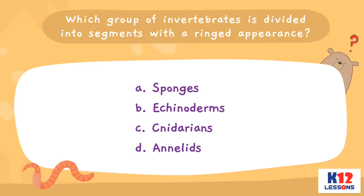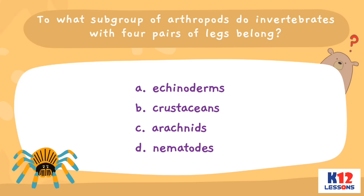Which group of invertebrates is divided into segments with a ringed appearance? A. Sponges. B. Echinoderms. C. Cnidarians. D. Annelids. To what subgroup of arthropods do invertebrates with four pairs of legs belong? A. Echinoderms. B. Crustaceans. C. Arachnids. D. Nematodes.